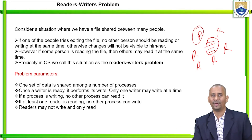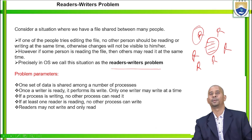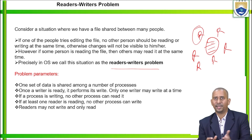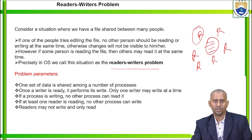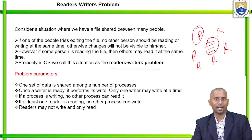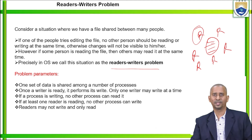However, if some person is reading the file, then others may also read it at the same time. In operating systems, we call this situation the readers-writers problem. The problem statement is: if one of the people tries editing the file, no other person should be reading or writing at the same time. For example, whenever a banking application is under maintenance, the banking admin can make modifications to the existing site, and automatically no account holder can access that particular banking site — that is why we see the message: 'Sorry for inconvenience, the banking site is under maintenance.'